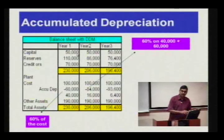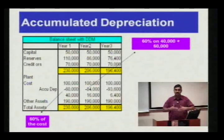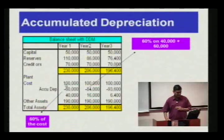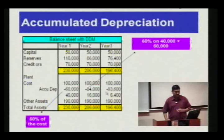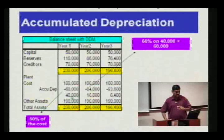Depreciation is shown in the income statement, but accumulated depreciation is shown on the balance sheet. Every year depreciation goes on accumulating. If the cost of the asset is 100,000 and depreciation is charged at 60% on the diminishing balance method, the first year accumulated depreciation is 60,000, the second year it is 84,000, and the third year it is 93,600. On the balance sheet I show cost less accumulated depreciation.